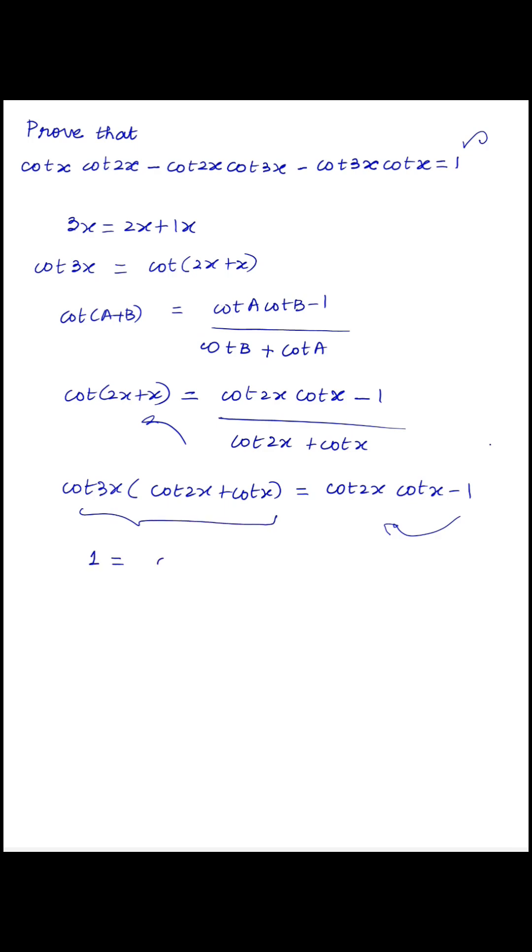So 1 is equal to cot 2x cot x, which already remains on the right-hand side, and these terms become negative when they move to the right-hand side. So it becomes cot 2x into cot 3x minus cot x into cot 3x. We have LHS equal to RHS, hence proved.